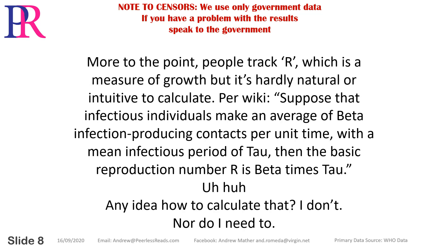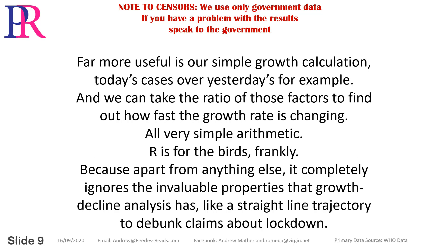People track R, which is a measure of growth, but it's hardly natural or intuitive to calculate. Per wiki: suppose that infectious individuals make an average of beta infection-producing contacts per unit time with a mean infectious period of tau, then the basic reproduction number R is beta times tau. Any idea how to calculate that? Far more useful is our simple growth calculation — today's cases over yesterday's — and we can take the ratio of those factors to find out how fast the growth rate is changing. All very simple arithmetic.